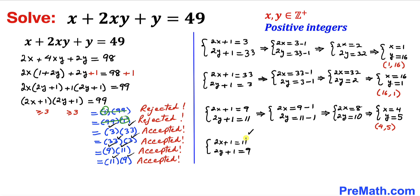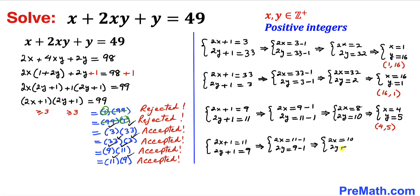For the final system, moving 1 to the right hand side gives 2x equals 11 minus 1 and 2y equals 9 minus 1, so 2x equals 10 and 2y equals 8. Dividing both sides by 2, x equals 5 and y equals 4, giving us the solution (5, 4).